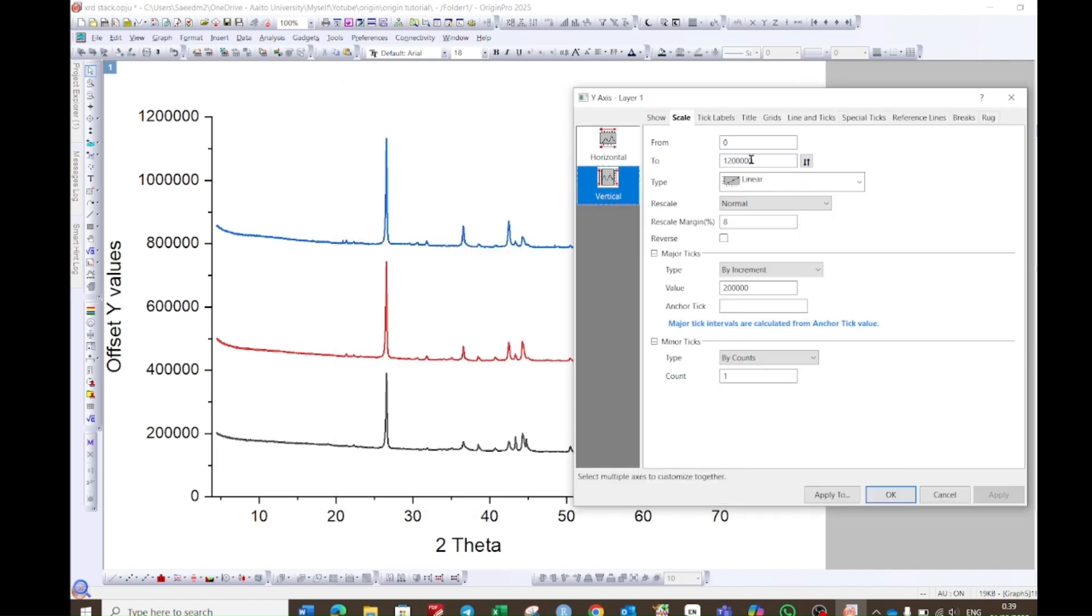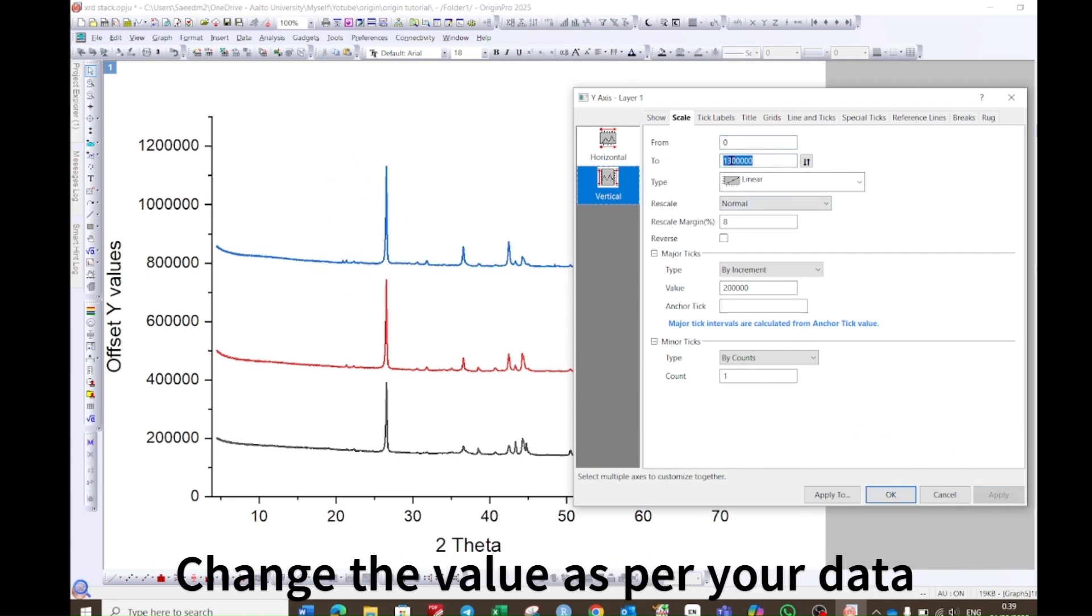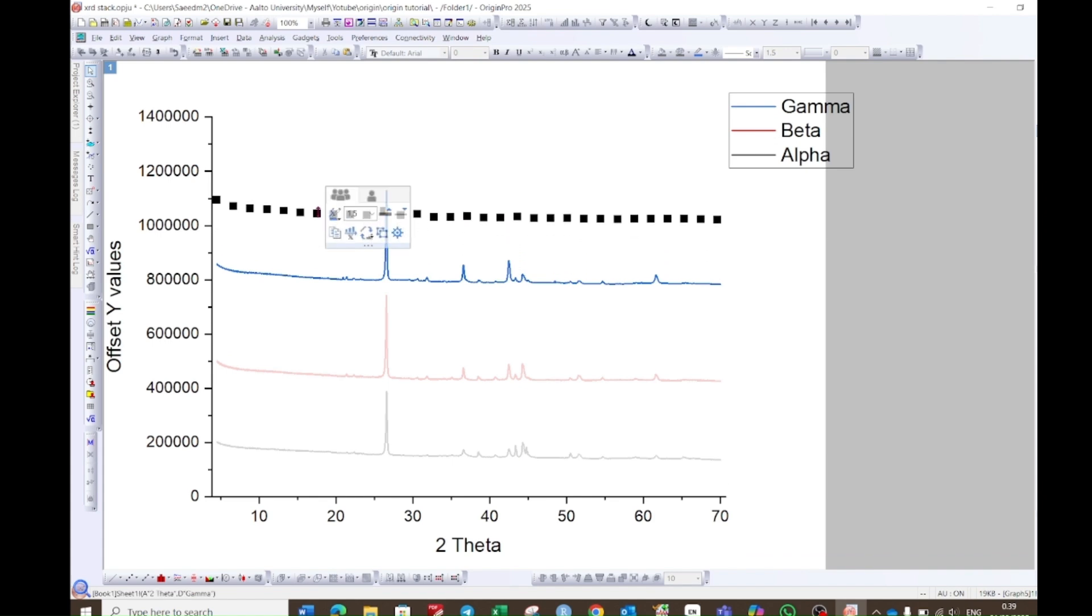Change the values from zero to some values which will be according to your data. If I increase it and then apply, then you will see the distance will be generated. At the moment I will increase it to a certain distance, and then you can select this and then drag it up.